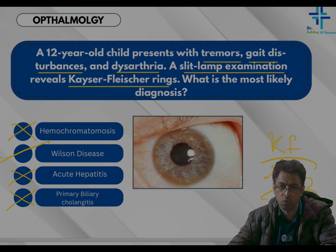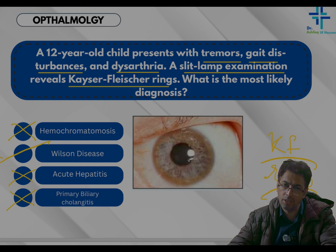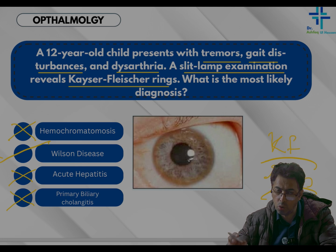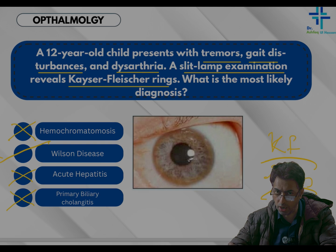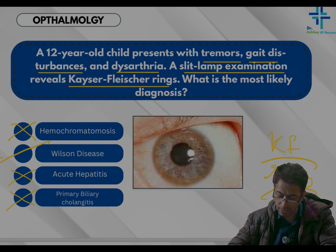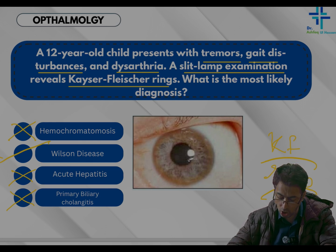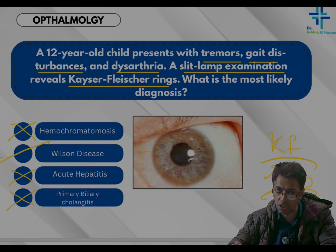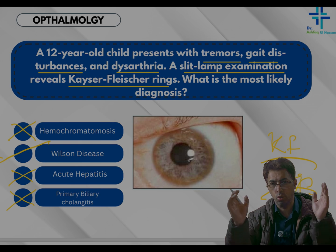In the liver there are copper deposits, and the lenticular nucleus — part of the basal ganglia — is where copper deposition occurs. Because the lenticular nucleus is concerned with movement, that is why there are gait disturbances. There is copper deposition in the form of Kayser-Fleischer rings, which are seen on slit-lamp examination.